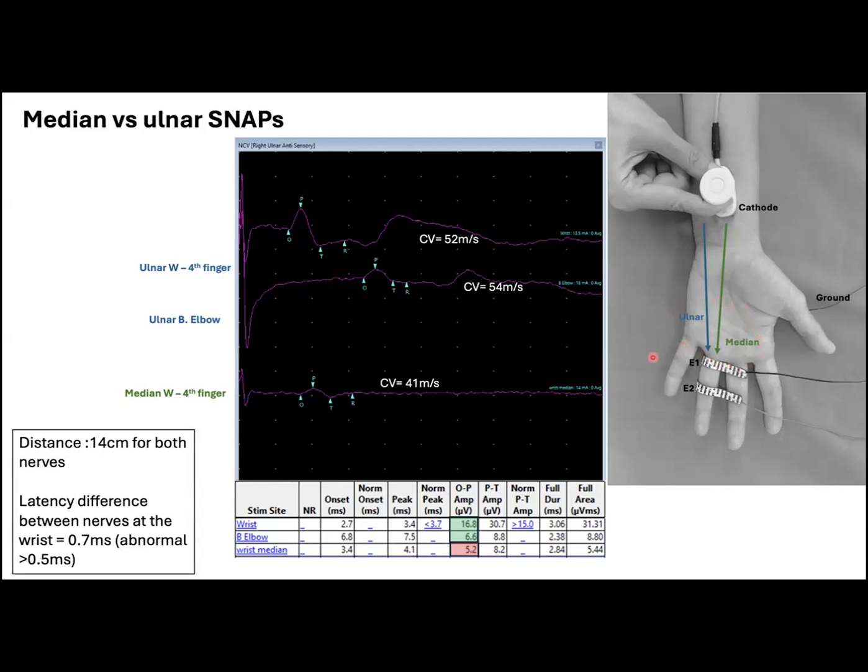To minimize this kind of motor artifact, especially when it starts to obscure the sensory potentials, you could try to use the smallest stimuli possible, to move the recording electrodes away from the muscle that is generating the motor response, let's say by placing the recording electrodes at the proximal interphalangeal joint, or by asking the patient to spread the fingers, or even by protecting the electrodes with galls.